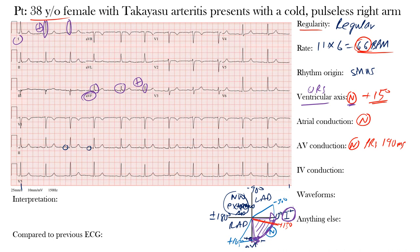Now for intraventricular (IV) conduction — the conduction within the ventricles. We look at the duration of the QRS complexes. Normal QRS duration is between 70 and 110 milliseconds (about two to three small boxes), with some considering the upper limit to be 120. On the EKG we see narrow QRS complexes within normal limits, and the QRS duration here was 98 milliseconds — confirming normal intraventricular conduction.